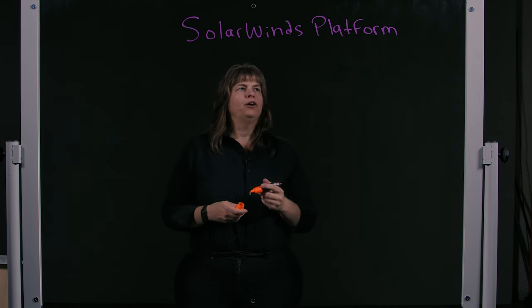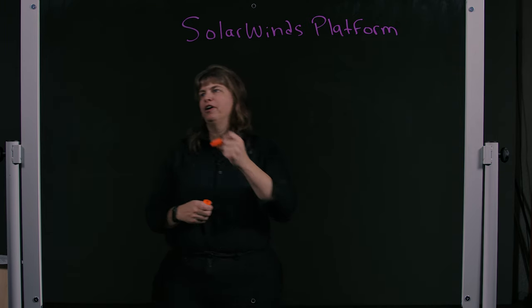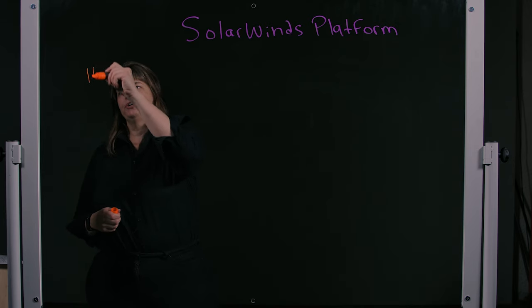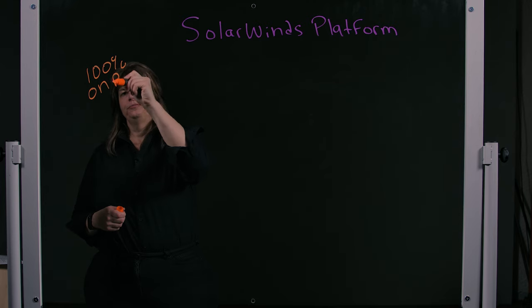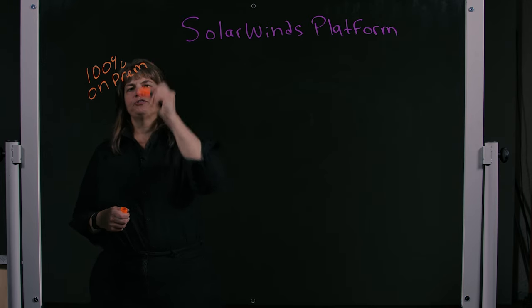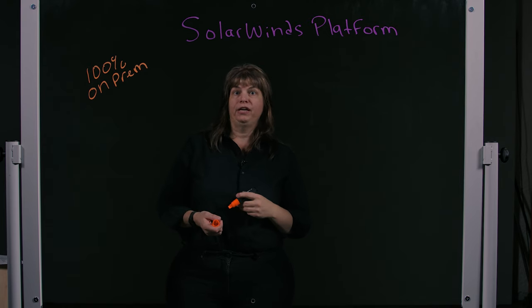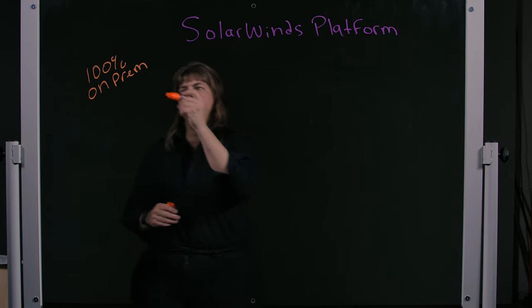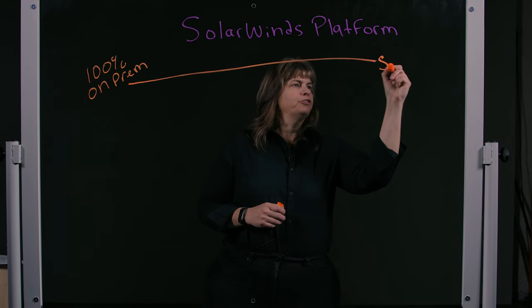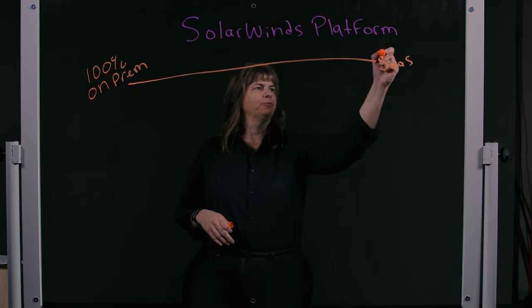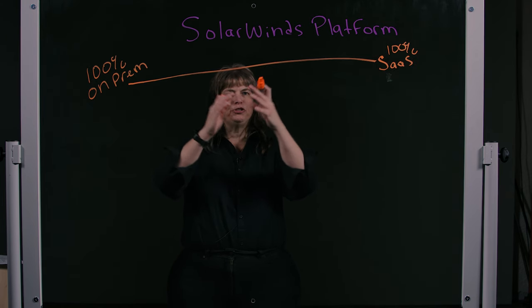Our customers now run a large range of different types of environments. They start at 100% on-prem, where we have customers who don't even have servers running SolarWinds software with internet connections — they're completely isolated. All the way out to customers that are 100% SaaS, and then we have customers that run in between.